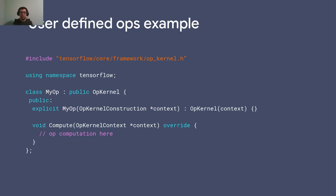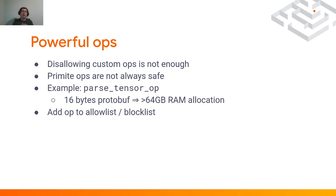Since this custom op is written by users, there are scenarios where we don't really trust the code written in there. But even if we disallow custom ops and only use ops that exist in TensorFlow, even those primitive ops are not always safe. For example, TensorFlow ships with an operation called ParseTensorOp, which takes a protobuf serialization of a tensor and expands it into memory. The problem is that very small protobufs — for example, 16 bytes — can result in a very large RAM allocation, over 64 gigabytes in our scenario.